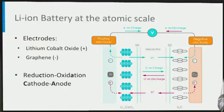Now we are going to relate the atomic scale properties of the electrode materials to the microscopic performance parameters of batteries. Let's start with capacity, voltage, and energy density.